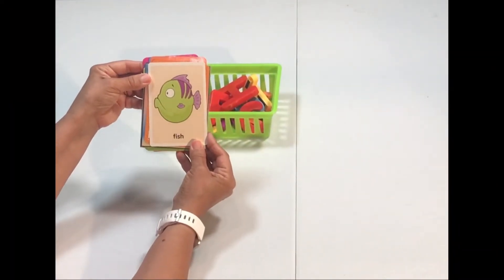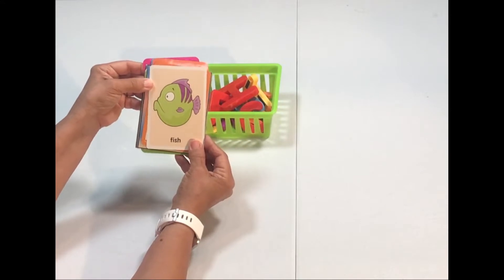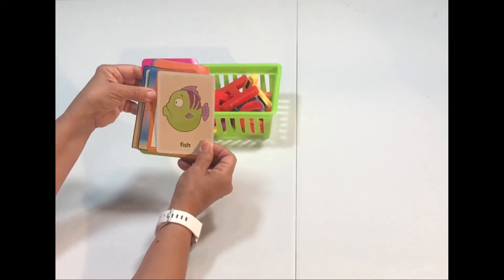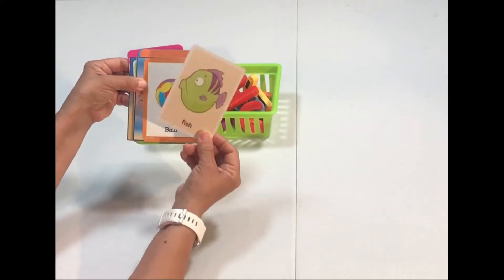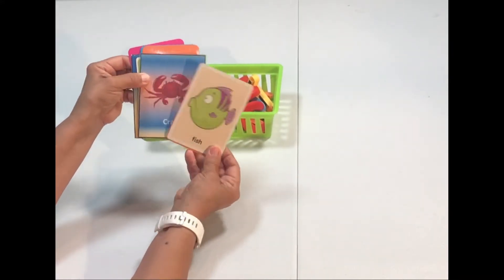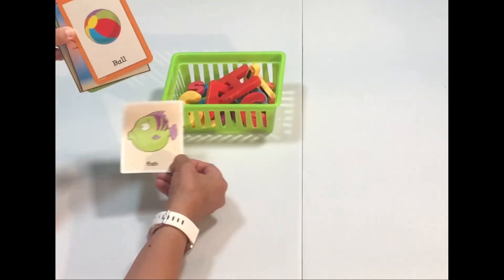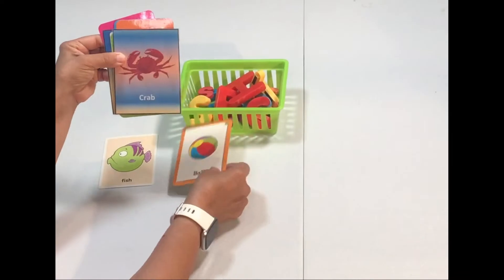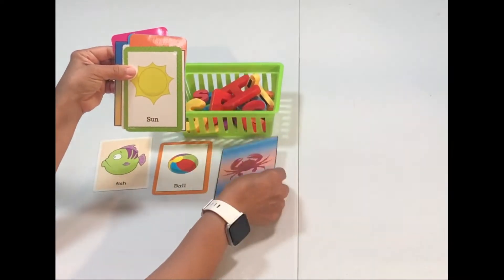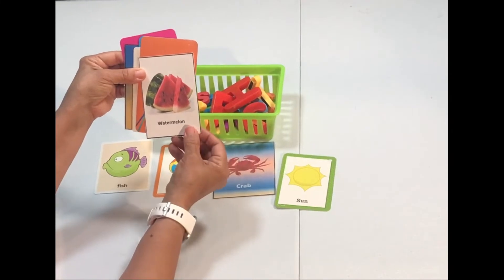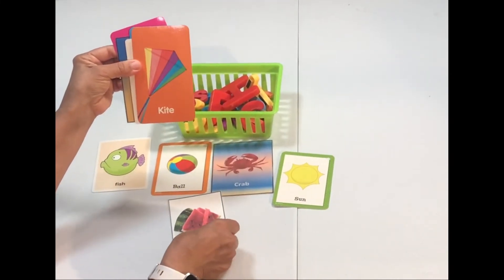One way I like to introduce or review vocabulary is by using flashcards. A lot of these flashcards are from Dollar Tree and some I made myself. So we would review the words fish, ball, crab, sun, watermelon, kite, and so on.